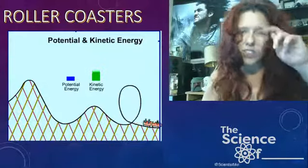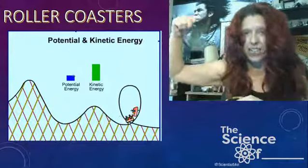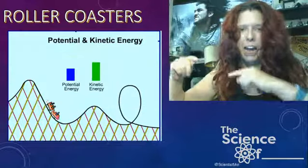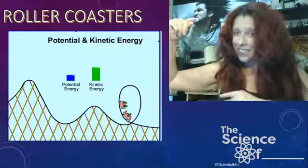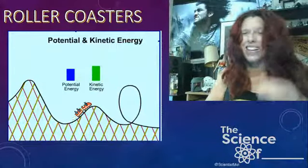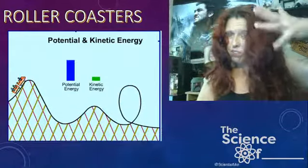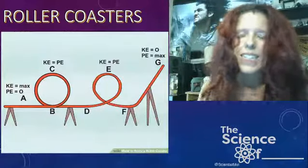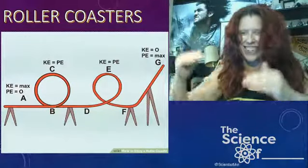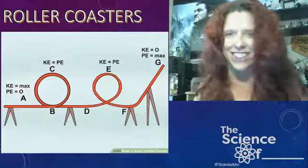This graph shows how potential energy increases the higher we go, and when it starts to drop, kinetic energy takes over. There's a balance — whenever the potential energy increases, the kinetic energy goes down, and whenever kinetic energy increases, potential energy goes down. But the higher the hill, the more kinetic energy available, because that balances out the potential energy. It's like a seesaw — one negates the other.